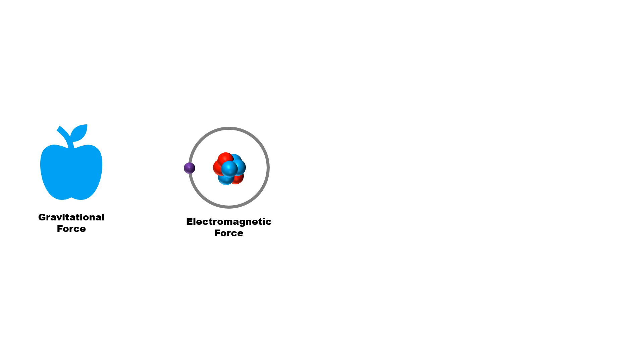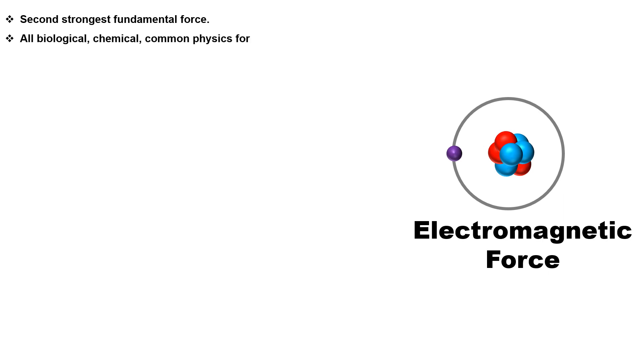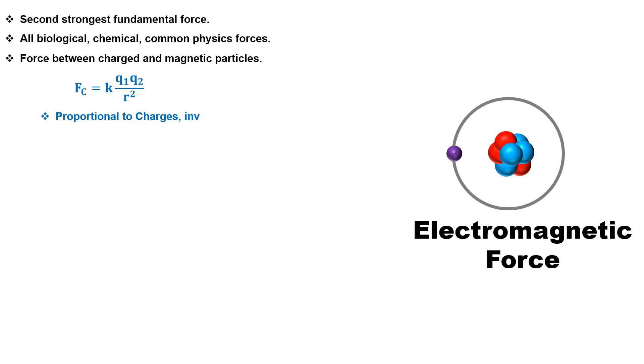But all objects are made of atoms, and the electron in the atom is located around the positively charged nucleus. This force between the electron and proton is electromagnetic force. Electromagnetic force is the second strongest fundamental force. All chemical, biological, or common physics forces are electromagnetic forces. For example, friction is also an electromagnetic force. The force applied between all charged particles and magnetic particles is electromagnetic force.